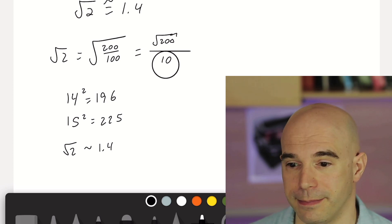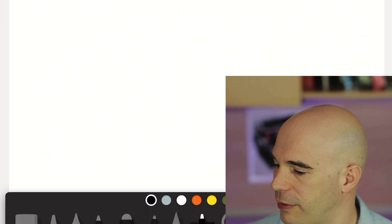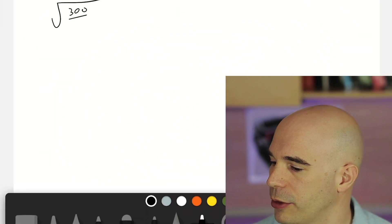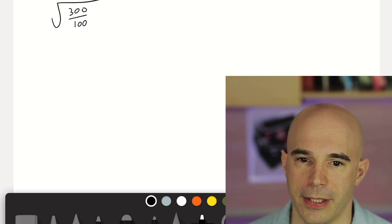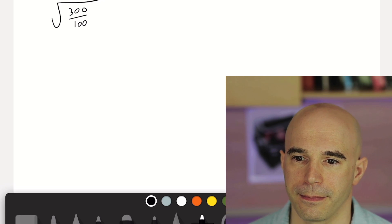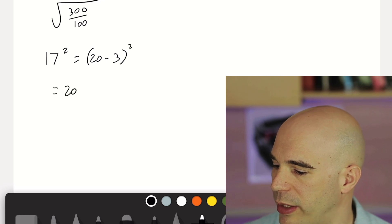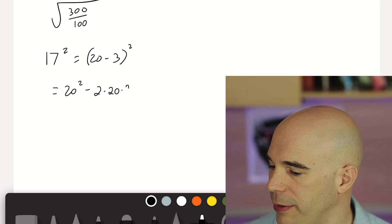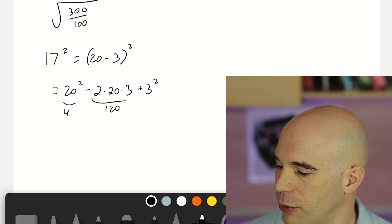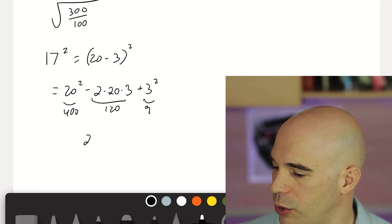And when you memorize the square root of 3, same thing, right? Don't think of it as a square root of 3. Think of it as the square root of 300 over 100. And then ask yourself, well, which perfect squares do I know in the neighborhood of 300? 16, 17, 17. Well, let's see. 17 squared. I don't have that memorized, but I would think of it as 20 minus 3 squared. And now I'm going to use the special product. So that's 20 squared minus 2 times 20 times 3 plus 3 squared. So this part is 120. This part is 400. So what's 400 minus 120 plus 9? That would be 289.